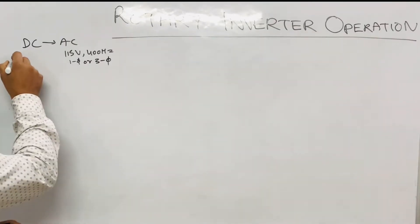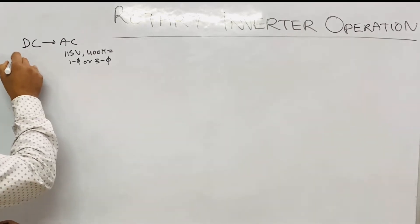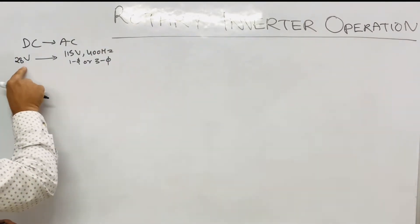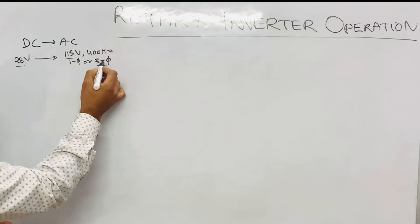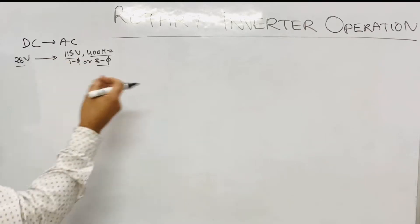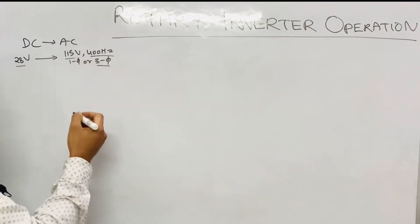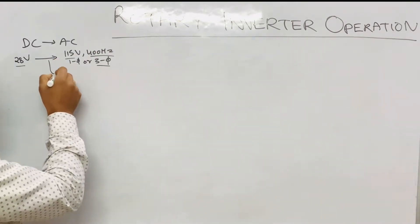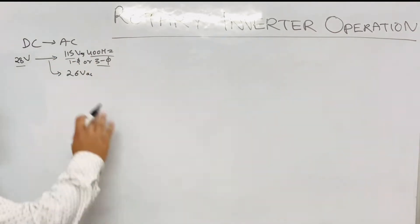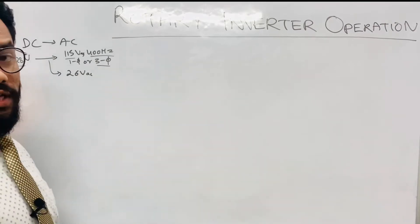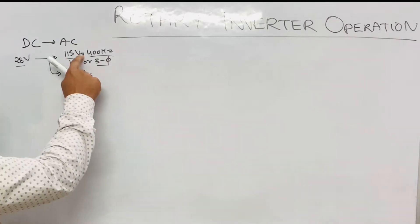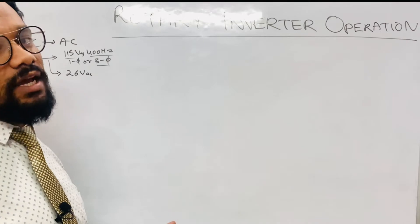The DC voltage can be a 14 volt or 28 volt system. I will explain a converter operation which converts 28 volt DC to 115 volt three phase 400 hertz. We can also have DC converted to AC at a lower voltage — 26 volt AC — which can be used for instruments, while the higher 115 volt AC is used for units like pumps.